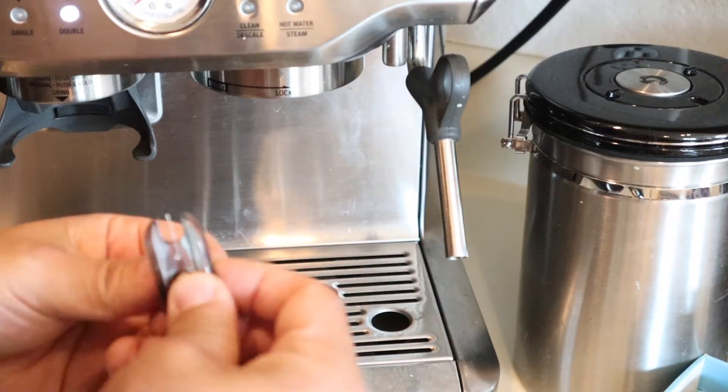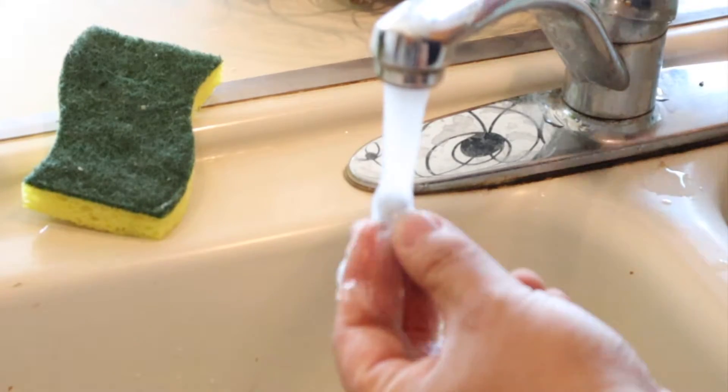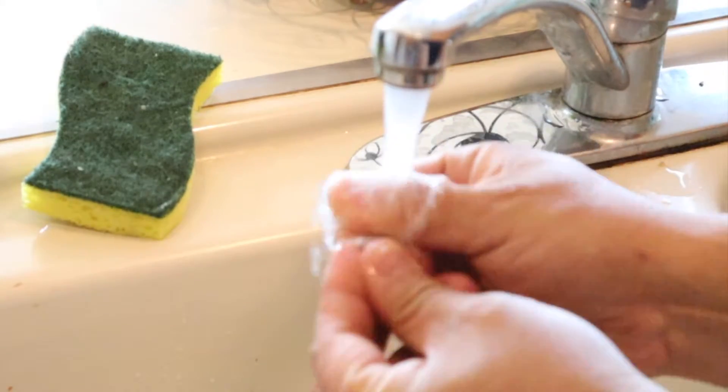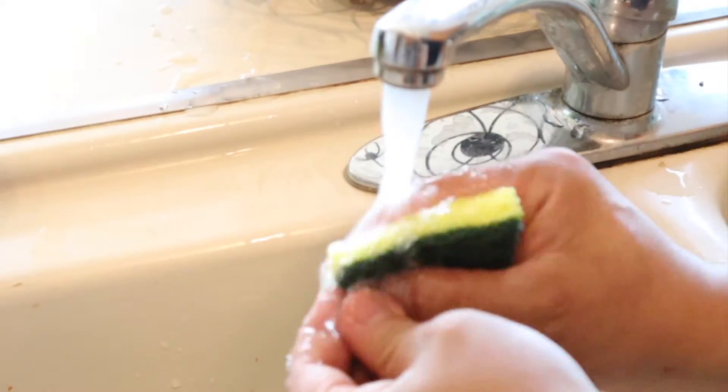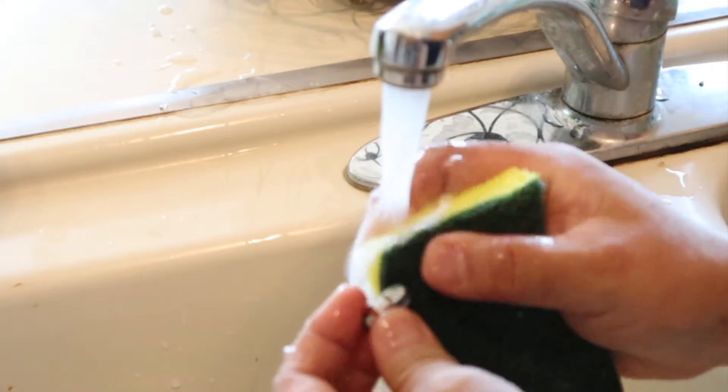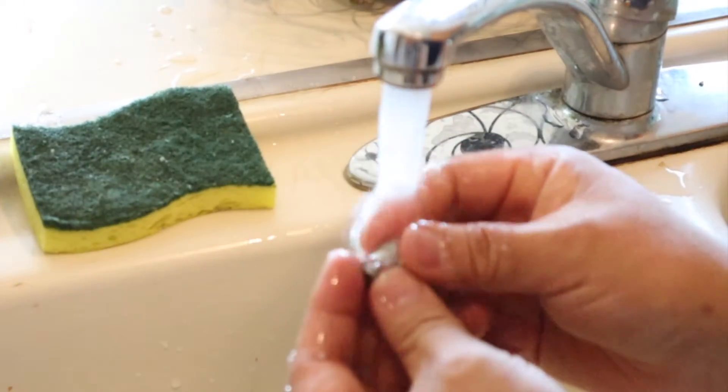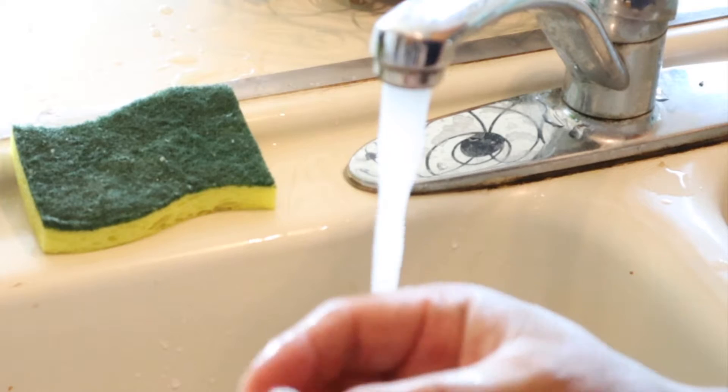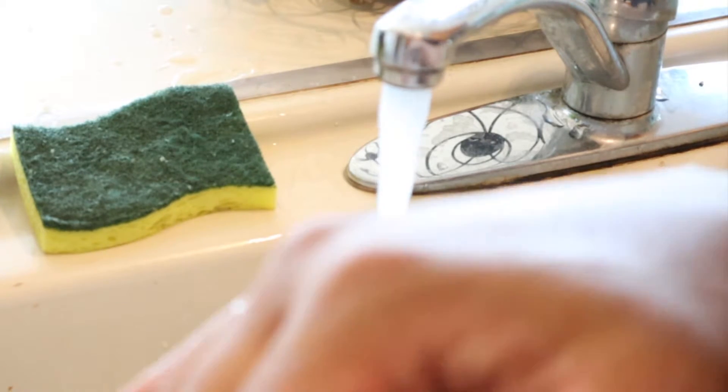And then let's go to the sink and clean this. Just make sure it's clean. I like to use the green pad to clean the whole thing. And if you see, I have this old milk residue. I hope you can see it right there.